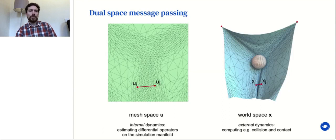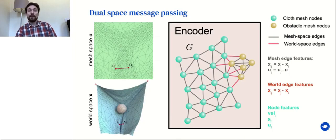For example, in the mesh representing the piece of cloth, there may be two points that are quite far apart when the cloth is flat, but may come into contact during the course of a simulation. Modeling this contact via the mesh edges could be very inefficient. Similarly, the mesh corresponding to the sphere is not even connected to the cloth mesh, so it would be impossible for the graph net to model the interaction between the two. Instead, we give our model capabilities to reason both in workspace and in mesh space.